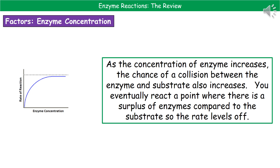The fourth and final factor is the concentration of the enzyme itself. Just like previously, as you increase the concentration of the enzyme, the rate of reaction increases, because the chance of collisions between enzyme and substrate also increases. However, you will get to a point where it levels off, because there's actually a surplus of enzymes compared to the substrate. If you've got more enzymes than substrate particles, increasing the enzyme amount further is going to have no effect on the rate.